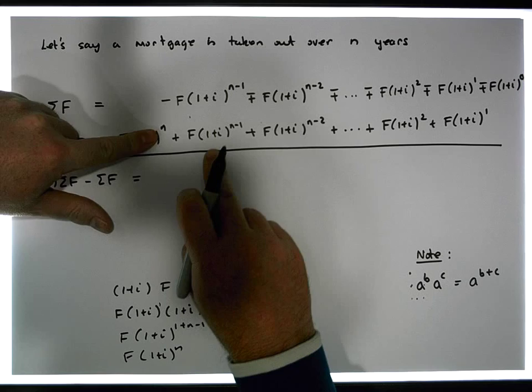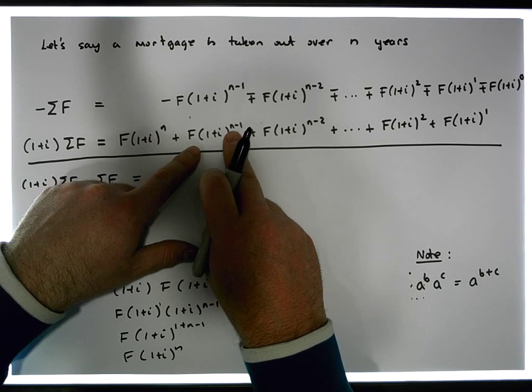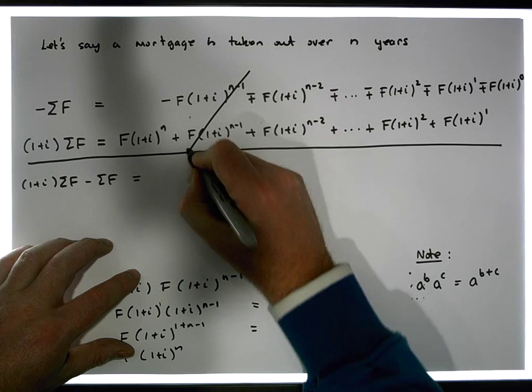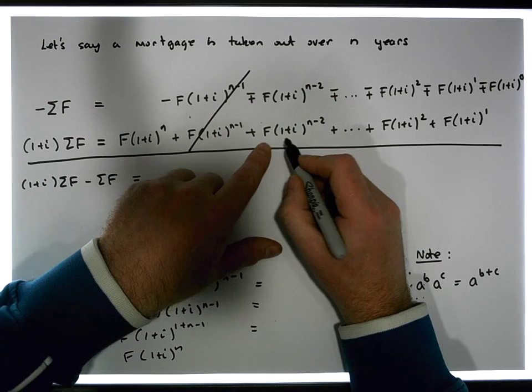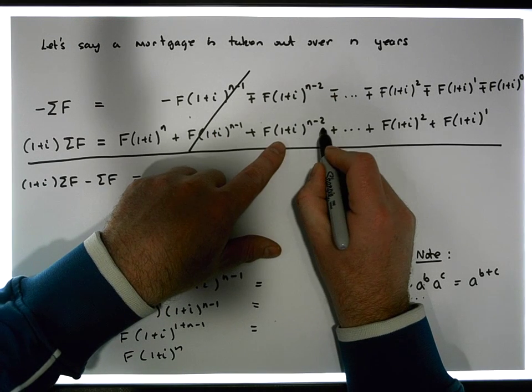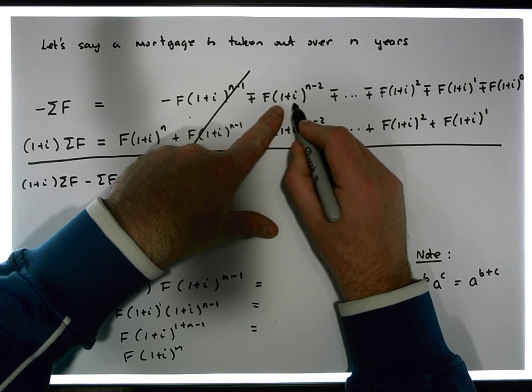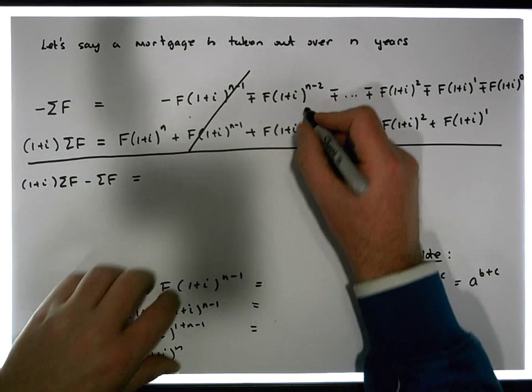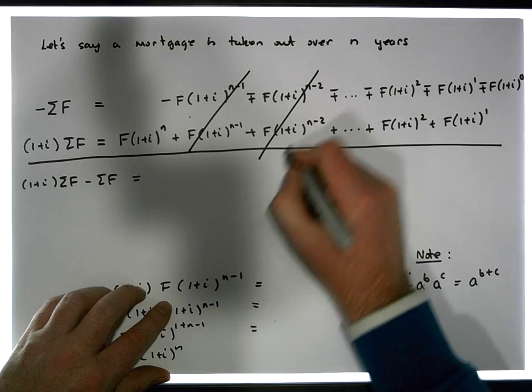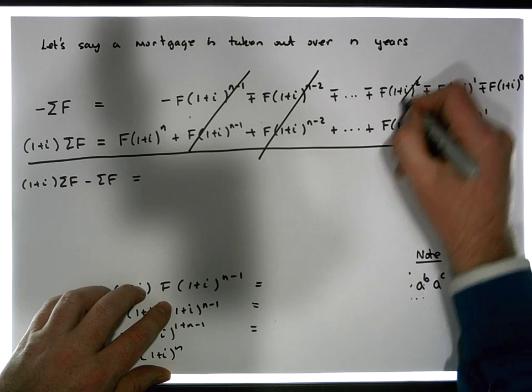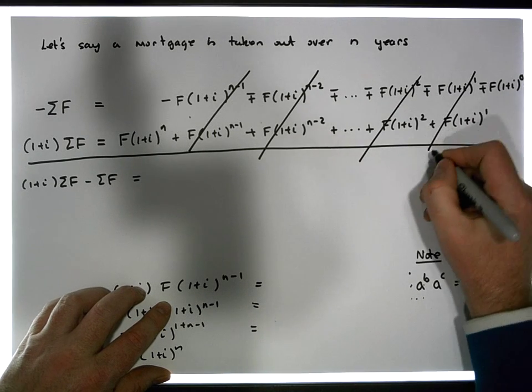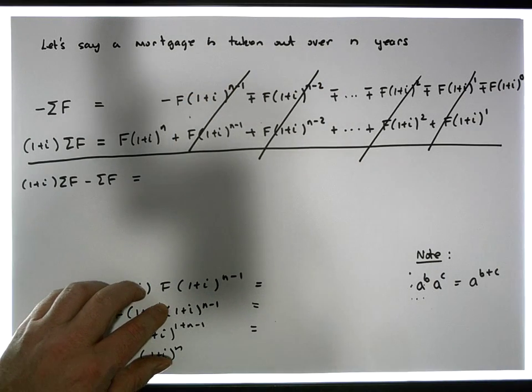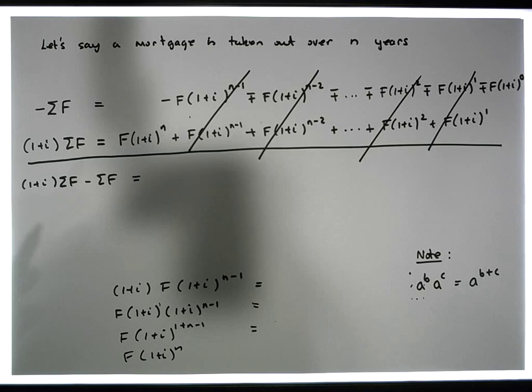We have an F times one plus i to the n minus one, and then we have a minus F times one plus i to the n minus one. So actually, these two terms here cancel. Also here we have an F times one plus i to the n minus two, and we have a negative version of it up here, or a negative counterpart up here, so them two cancel. And you can see that actually all the way down, what we have is these terms cancel out. So we have this telescope effect where terms are cancelling out all the way down through this particular calculation.